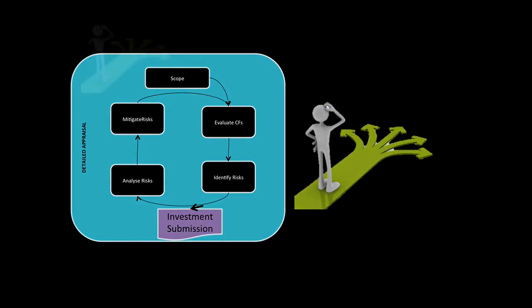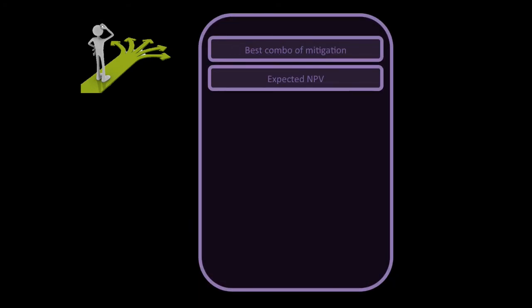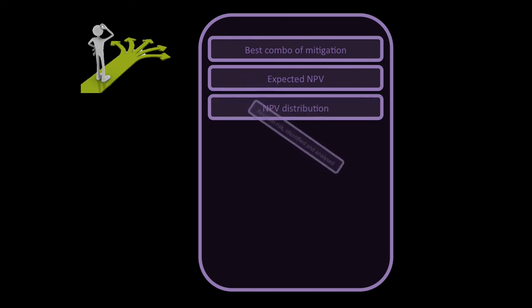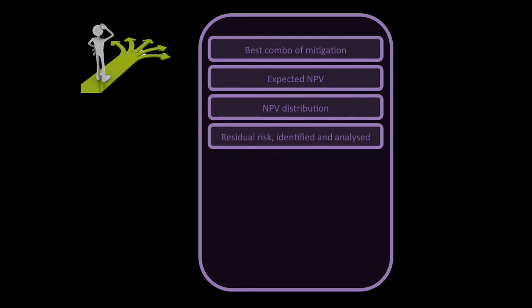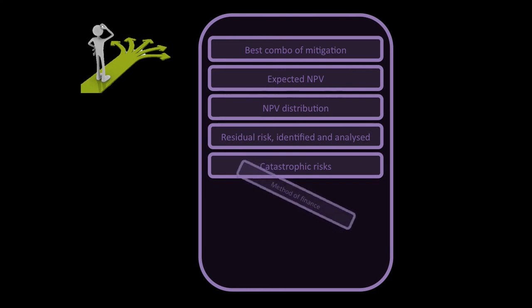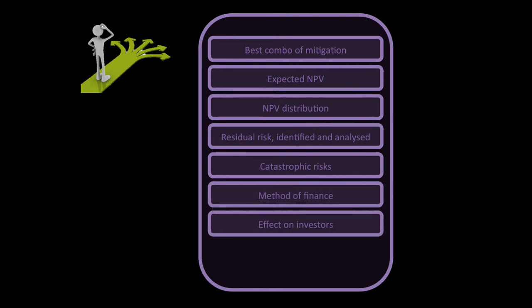Finally, the investment submission. What's the best combination of mitigation? What's the expected net present value? What's the distribution of it? Are there any residual risks that need to be identified and analyzed? Are there any catastrophic risks that we need to be aware of? What's the method of finance? What's the effect going to be on investors? Is the sponsor's criteria met?